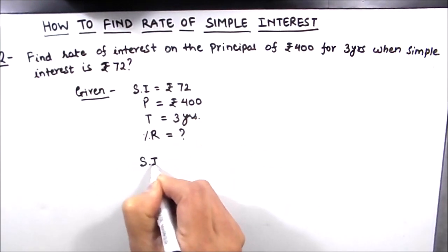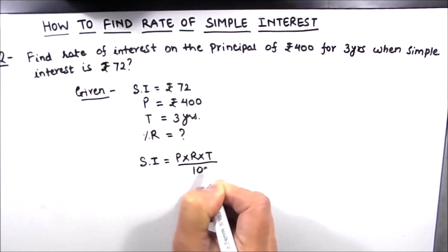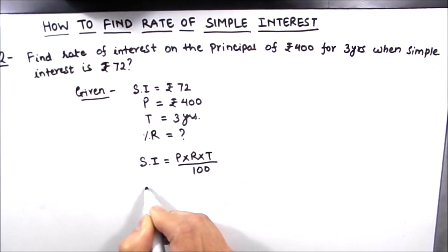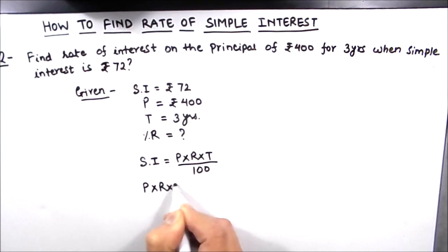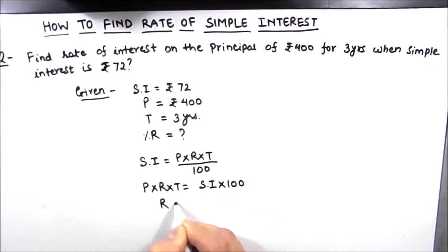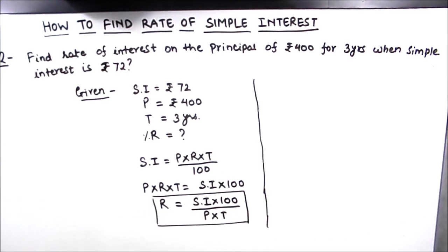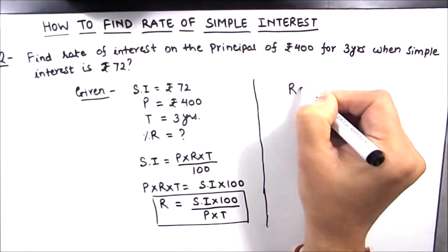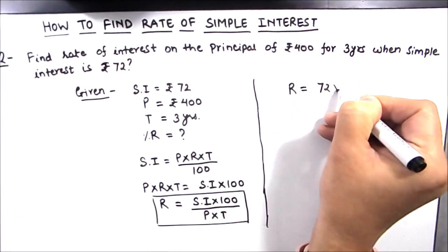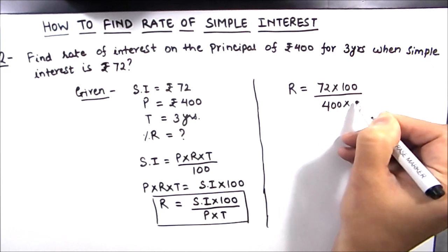Our simple interest formula is P × R × T ÷ 100. From this formula we will find the rate of interest. So P × R × T = Simple Interest × 100, therefore R = (Simple Interest × 100) ÷ (P × T). Substituting the values: rate of interest = 72 × 100 ÷ (400 × 3).